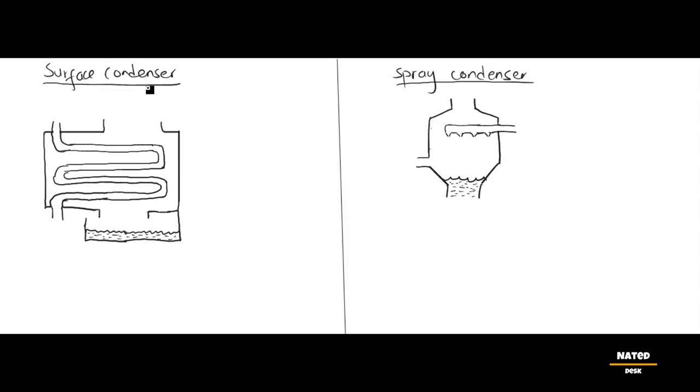Take note. The condenser must maintain a vacuum condition. When we say a condenser must maintain a vacuum condition, it means that the inside of the condenser should be almost completely empty without any air or other gases.